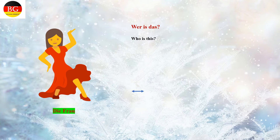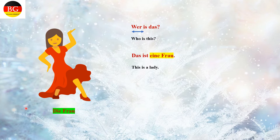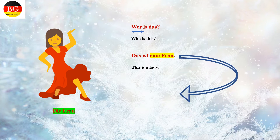Wer ist das? Das ist eine Frau. 'Die' is the bestimmter Artikel for 'Frau', and 'eine' is the unbestimmter Artikel for 'Frau'. In order to describe in detail what the Frau is doing, we use the bestimmter Artikel: 'Die Frau tanzt' — the lady is dancing.